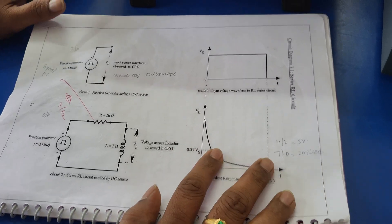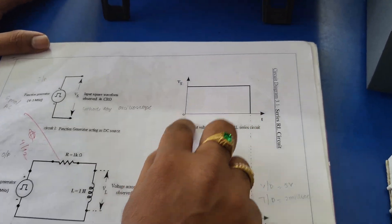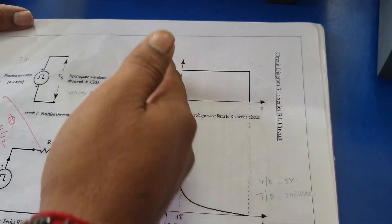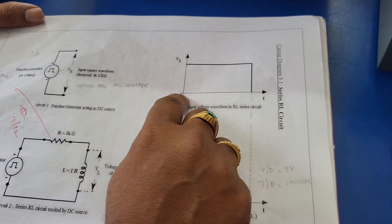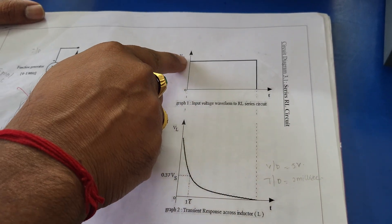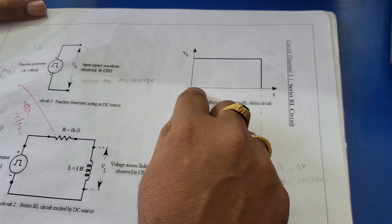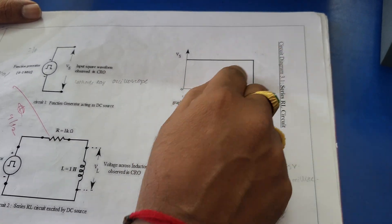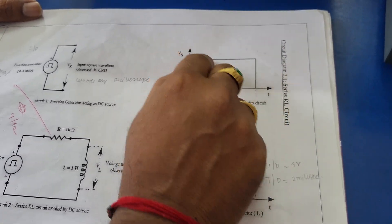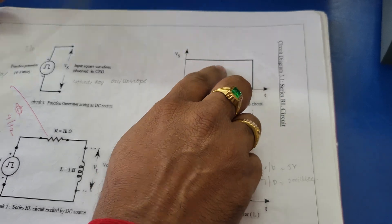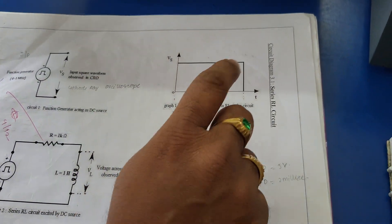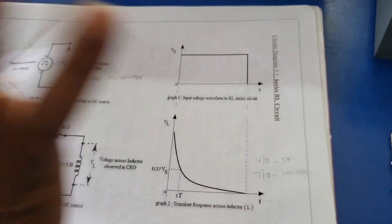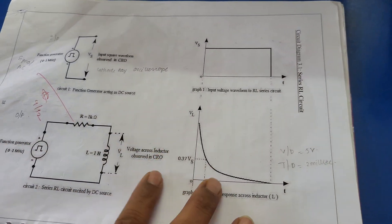Next, coming to the steady state response. Here, taking the same time and voltage axes: when time is zero the response is high, but as time changes from zero onward the response remains constant — it does not depend on time. This response is called the steady state response.